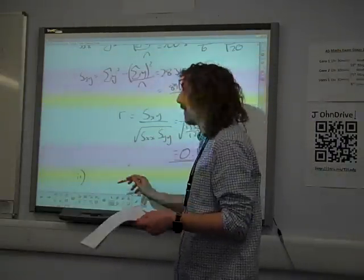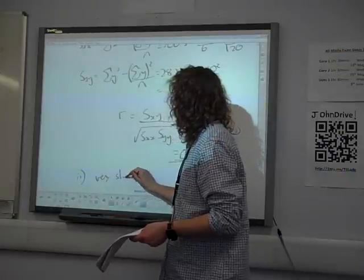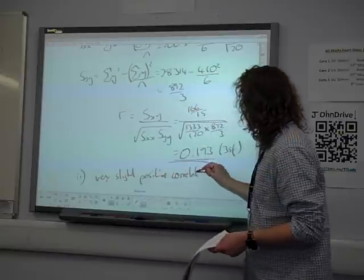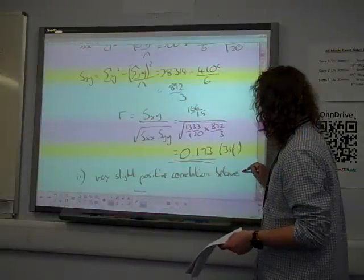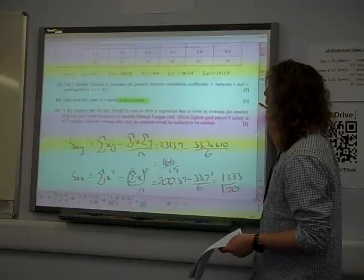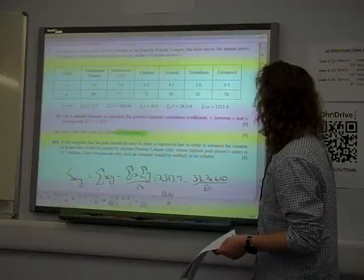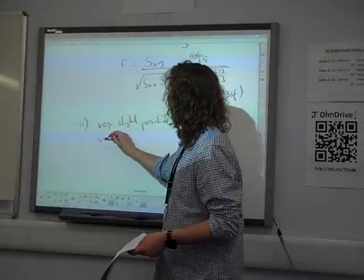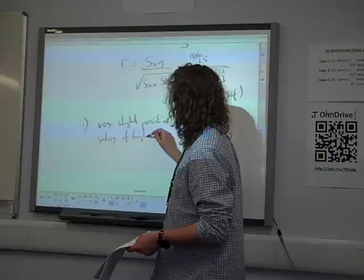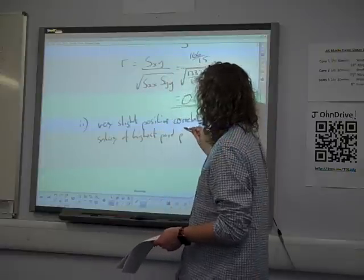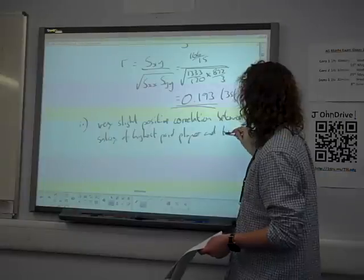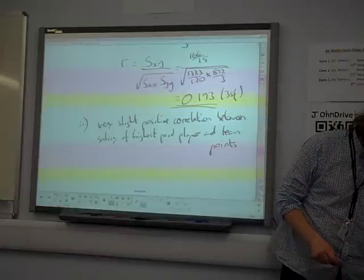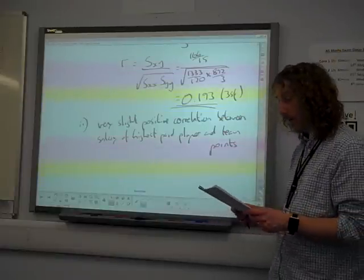So there is only a slight positive correlation. But we've got to get the context in, so between, and what was it? It was between annual salary of the highest paid player and team points. Okay, so we've got to get that little bit of context in the end. Without the context, it's no good at all.